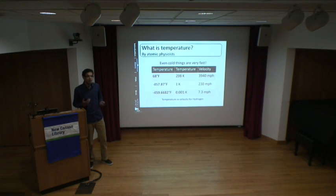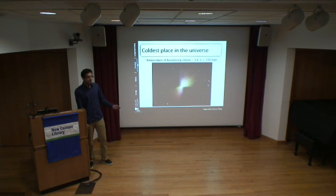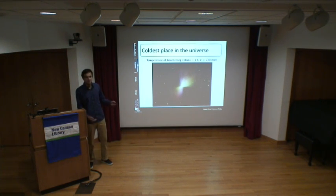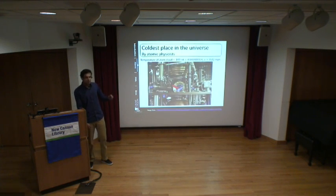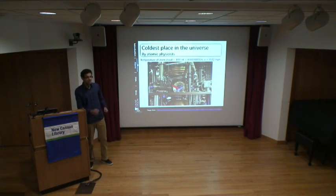The coldest naturally occurring temperature in the universe is the Boomerang Nebula in deep interstellar space — about one Kelvin, where atoms move at 230 miles per hour. But atomic physicists laugh in the face of this. In labs, we have a typical atomic physics setup with a small blue dot at the center — a sample of atoms trapped and cooled all the way down to 100 nanokelvin, which is 0.0000001 Kelvin.